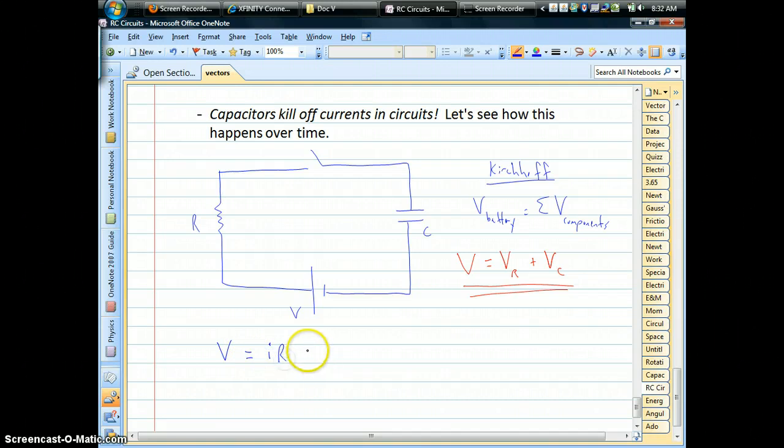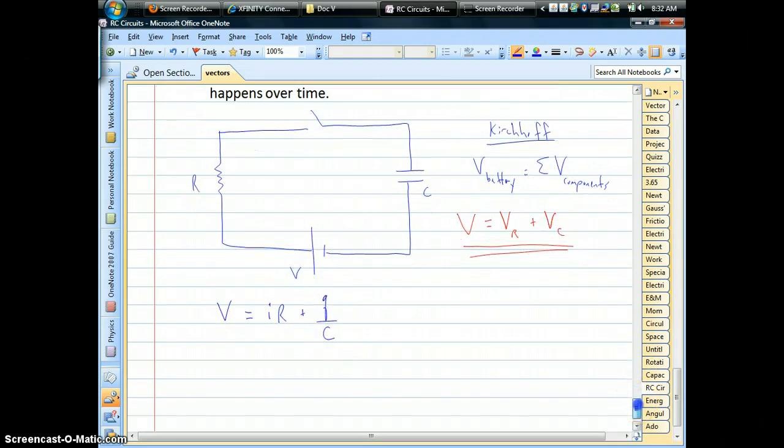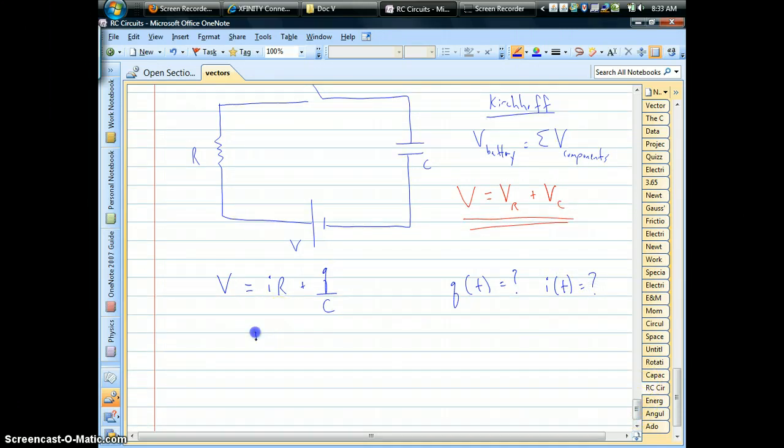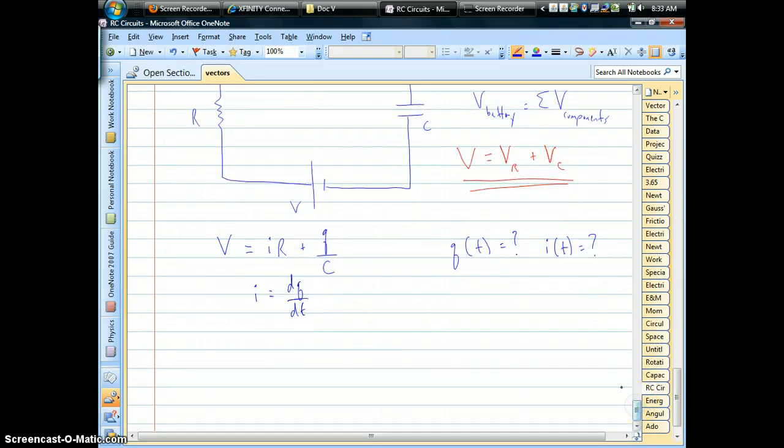We know how to find voltage for resistors, and we know how to find voltage for capacitors. Since our goal is to figure out what's the charge as a function of time and also what's the current as a function of time, we need to make a substitution where we know our definition for current in the first place. It's dq/dt, the rate at which the charge is moving through your wires. So we're just going to substitute that in.